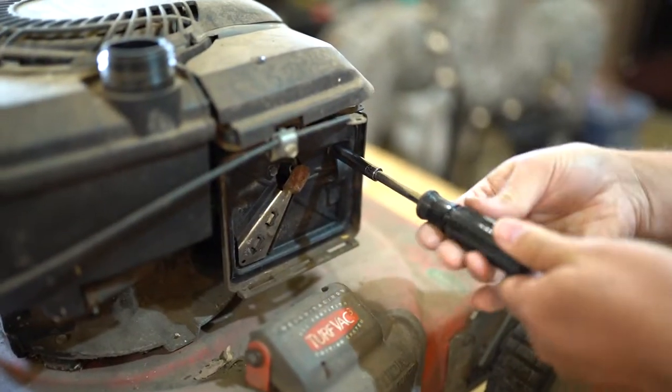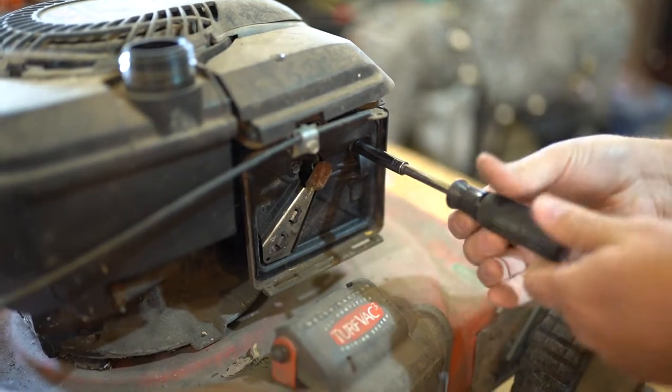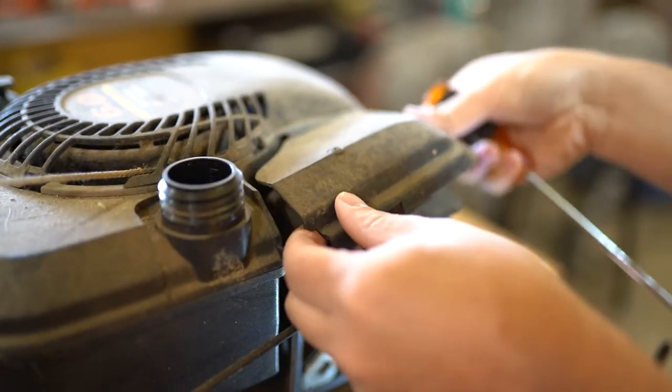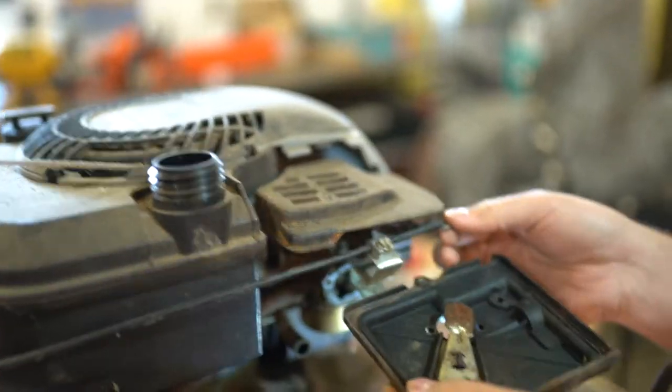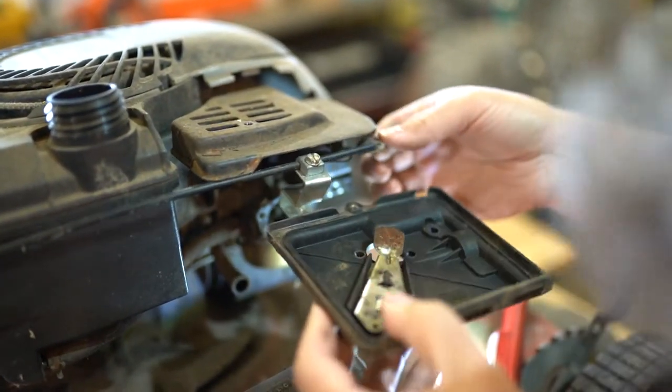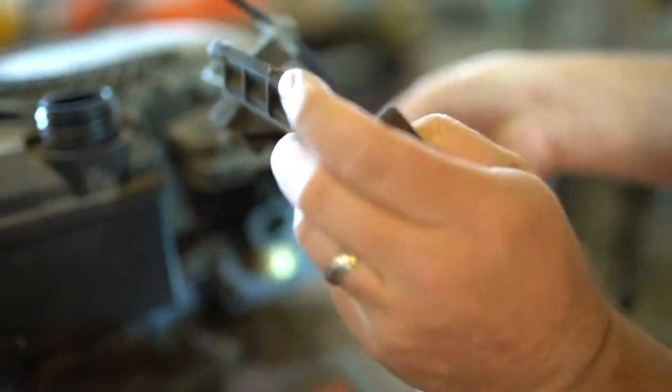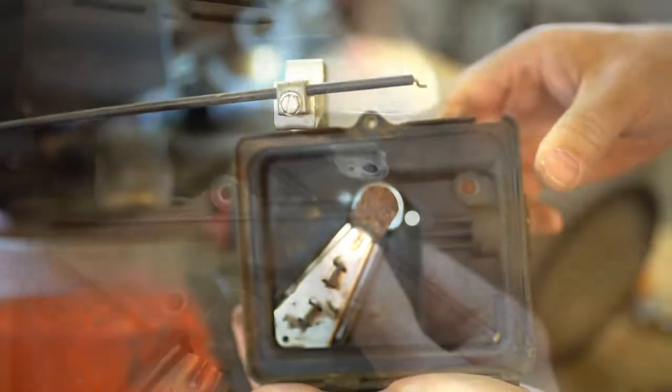Next let's remove the three eight millimeter retaining bolts. A Phillips screw holds down the upper plastic shielding. Before removing the intake manifold disconnect the choke line which articulates with the smaller of these two holes.